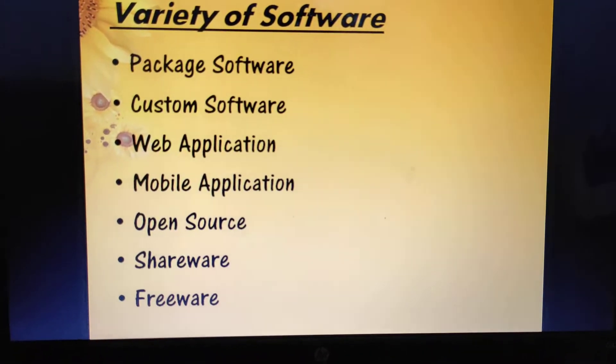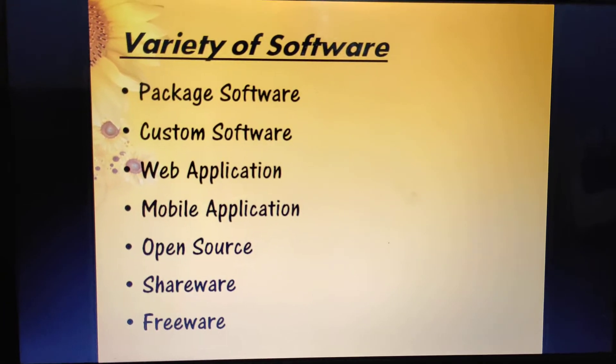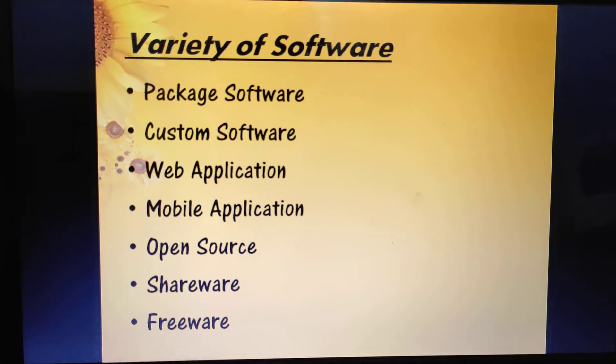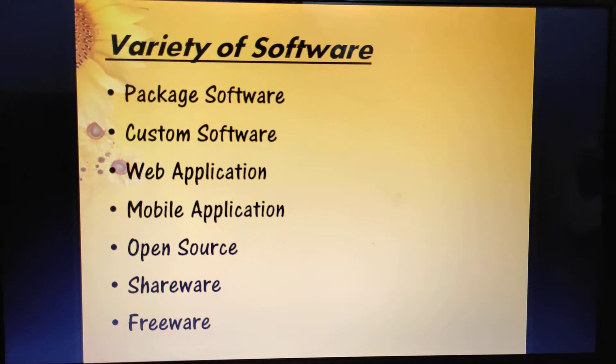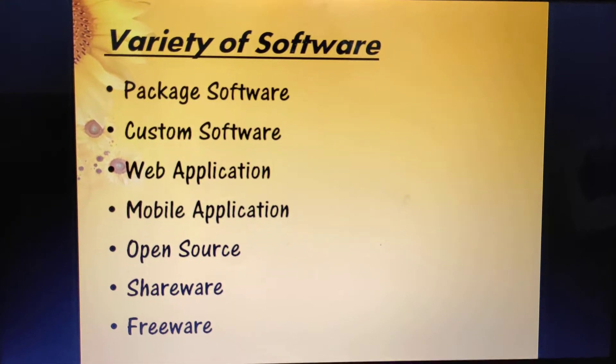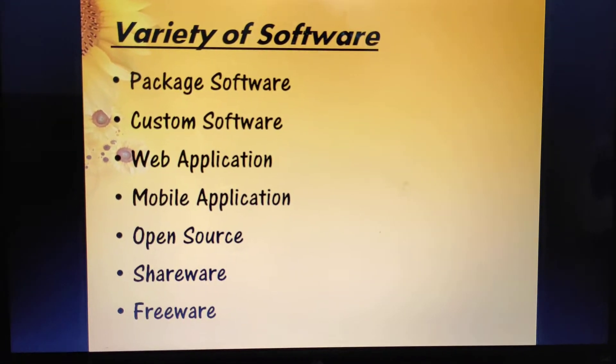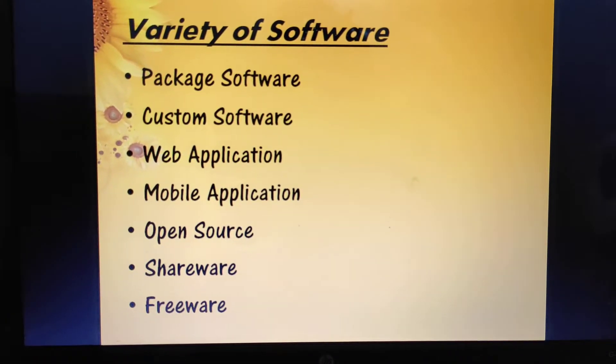Next is freeware — it is copyrighted software provided at no cost by an individual or a company that retains all rights to the software. So these are some varieties of software.